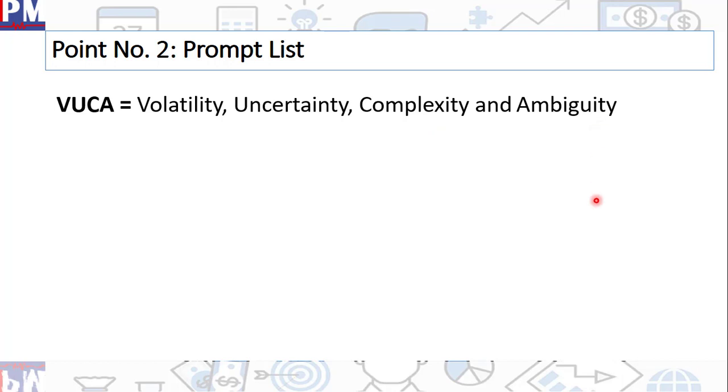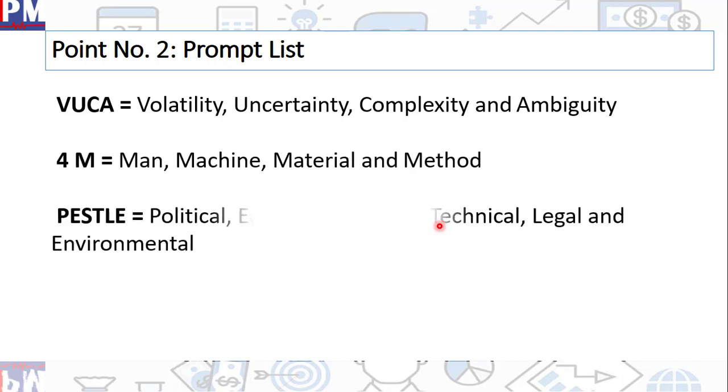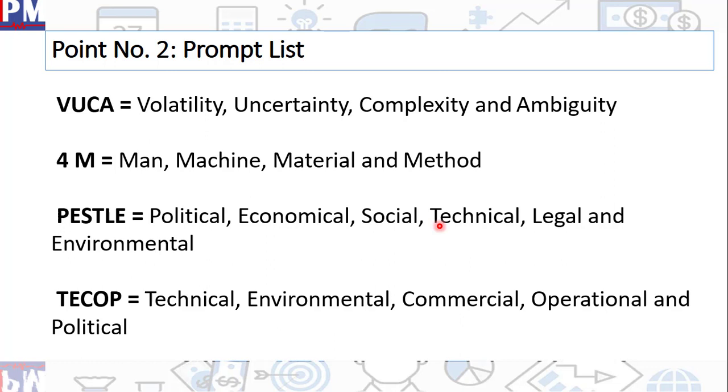What kind of questions can they show up in PMP exam? Only of two kinds. One is, they'll just show VUCA and say, what is the correct full form of VUCA? So you have to choose the right one from the options provided. The other one is that they will write in the question that which of the following is an example of a prompt list. So one of the options would either have VUCA or 4M or PESL or TCOP. These are the most popular in the PMP exam. 4M does not show up as much. VUCA by far is the most popular. In fact, you can get away by just remembering VUCA. But to be on the safe side, just look at PESL and TCOP and remember, these are prompt list.